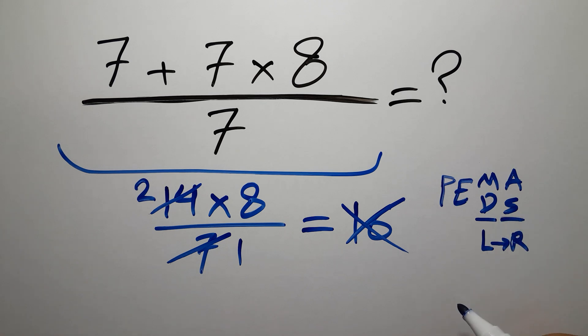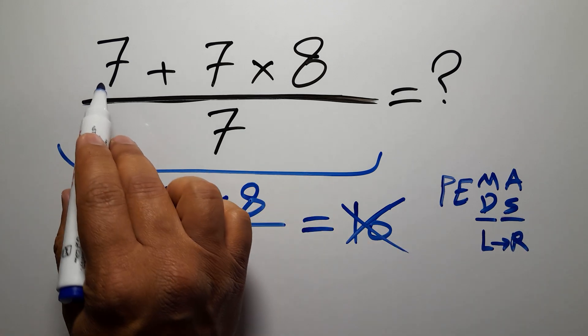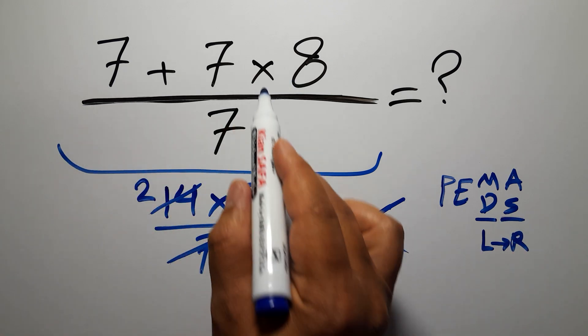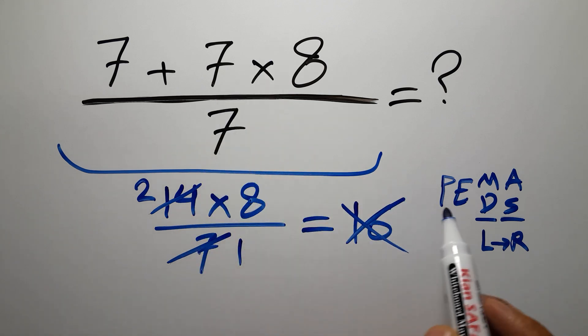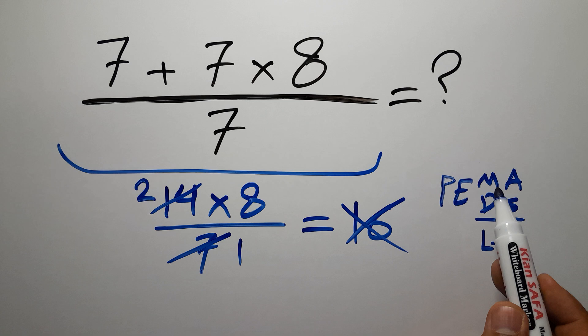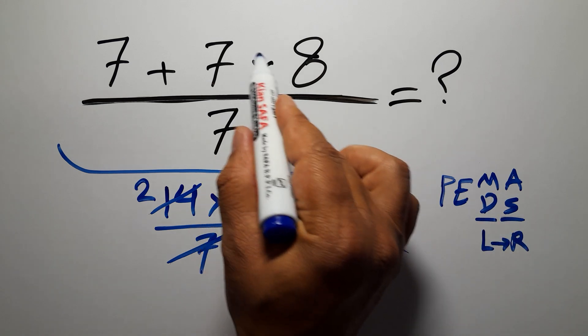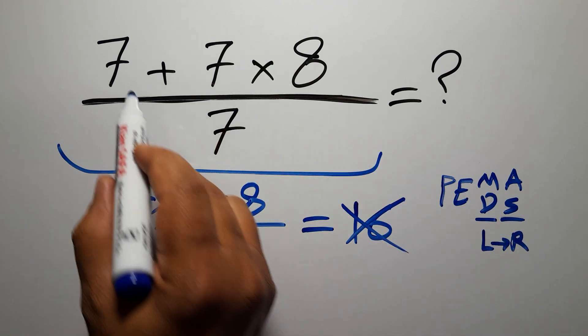So here in the numerator, first we have to do this multiplication because in PEMDAS, multiplication comes before addition. So first we have to do this multiplication, not this addition.